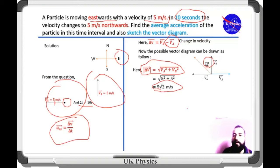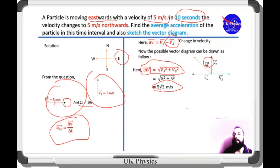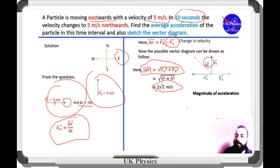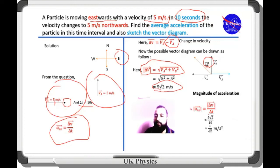Finally, we are asked to find the average acceleration. Acceleration is a vector quantity, so we have to calculate both its magnitude and direction. First, calculating the magnitude of acceleration using the formula, and putting in all values, we finally get the average acceleration as 1/√2 meter per second squared.